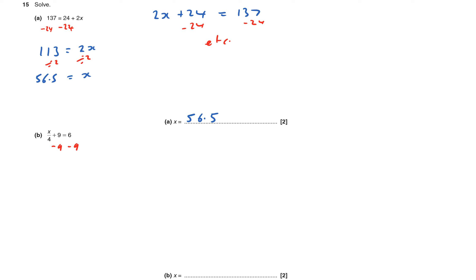So I'm going to take away 9 from both sides and that will vaporize the plus 9 and leave me with x divided by 4 equals 6 take away 9 is negative 3.